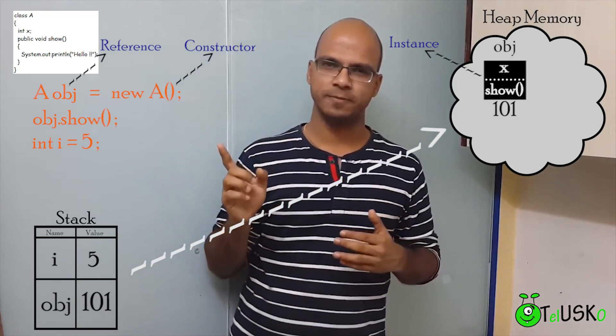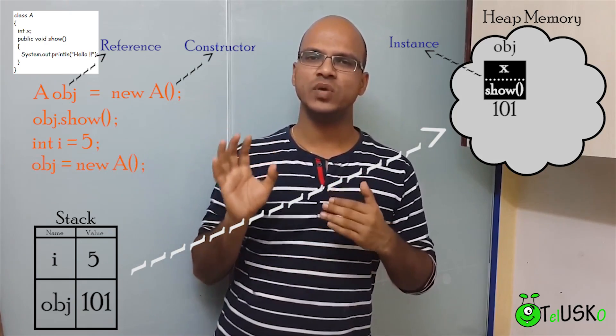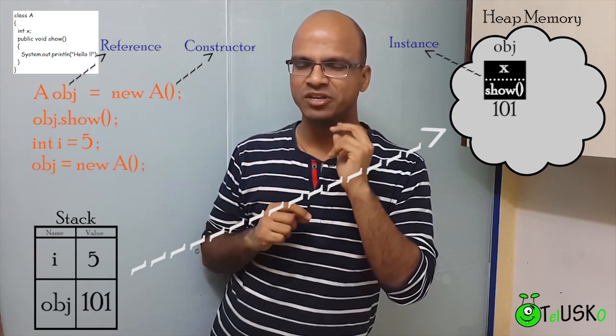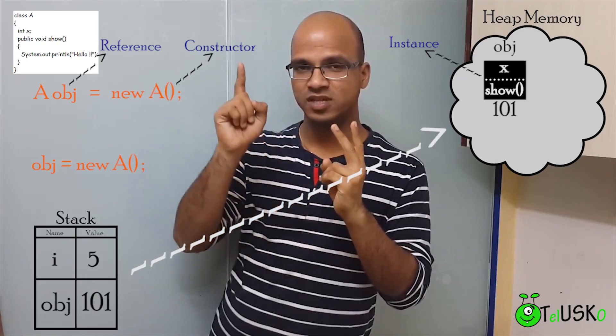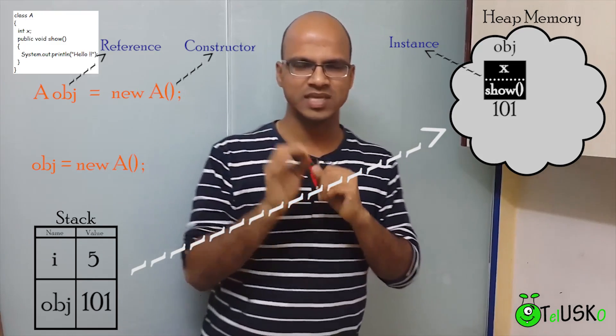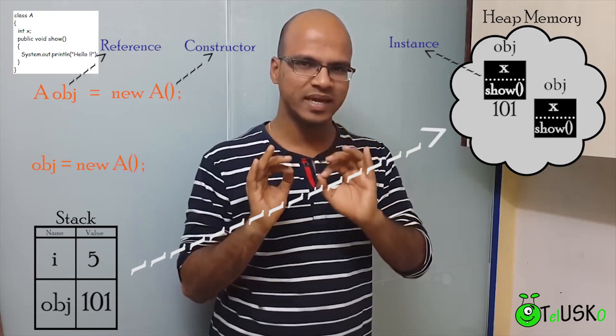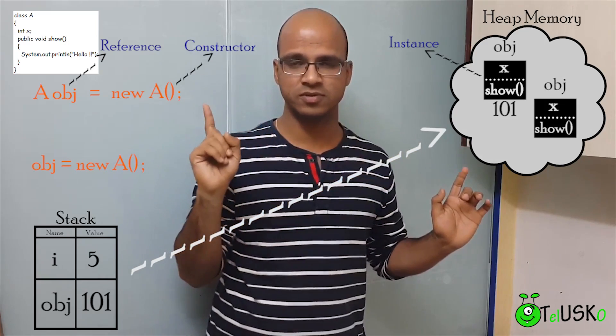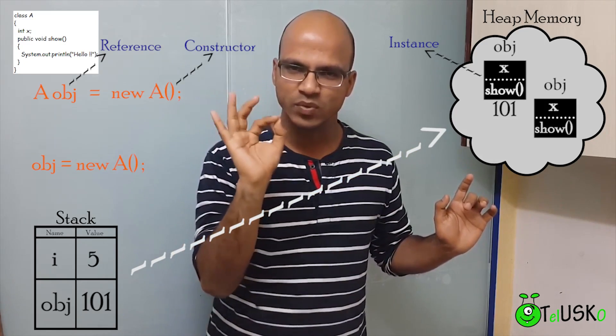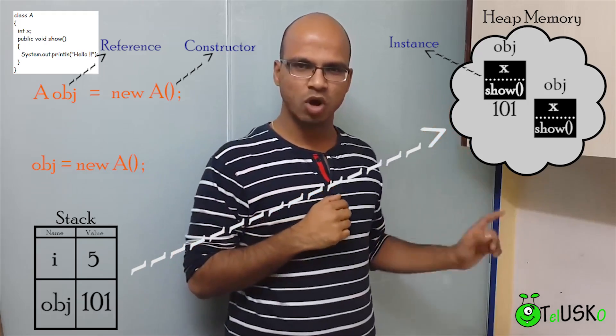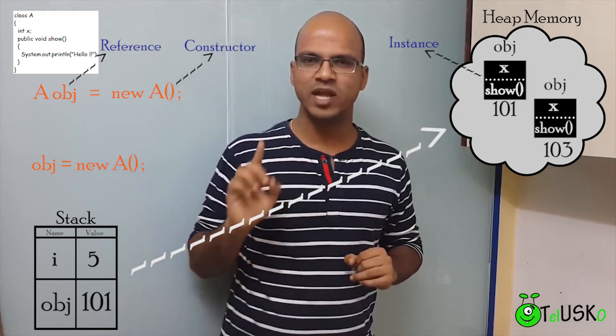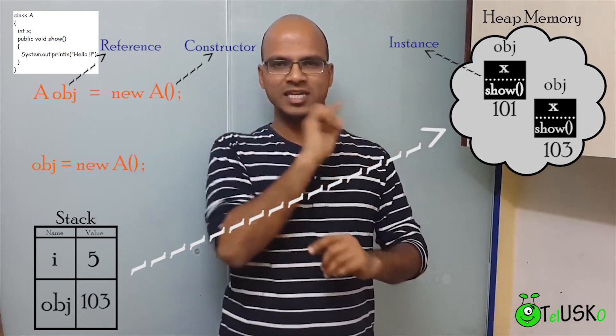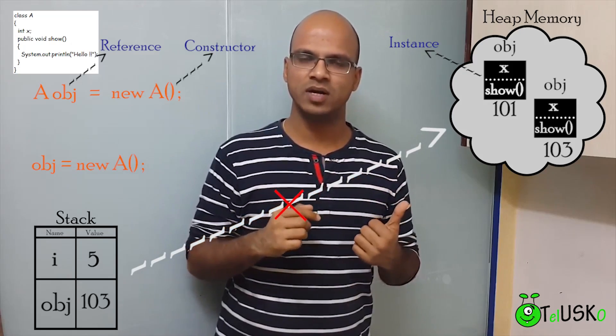But what happens when you write this line? Now you have obj equal to new A. So we have created that reference only once but we are initializing that reference two times in the first line and the second line. Now what happens is every time you write new A, it will create a new object. So now we have two objects and one reference. Now since we are using the thing called equal to, the new object is 103. So it will replace the value of the stack. So now obj value is 103, not 101. So the old link is broken and now we have a new link.